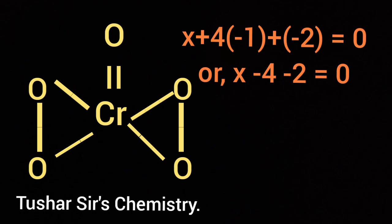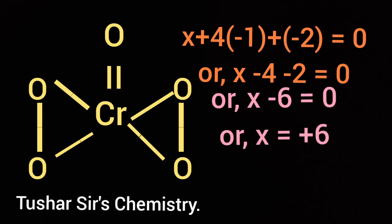By solving this equation, x plus minus 4 plus minus 2 is equal to 0. x minus 6 is equal to 0. x is found to be plus 6.